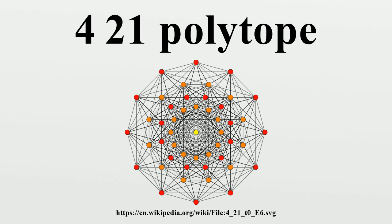There are 17,280 simplex facets and 2,160 orthoplex facets. Since every seven-simplex has seven six-simplex facets, each incident to no other six-simplex, the 421 polytope has 120,960 simplex faces that are facets of seven-simplexes. Since every seven-orthoplex has 128 six-simplex facets, half of which are not incident to seven-simplexes, the 421 polytope has 138,240 simplex faces that are not facets of seven-simplexes. The 421 polytope thus has two kinds of six-simplex faces not interchanged by symmetries. The total number of six-simplex faces is 259,200.